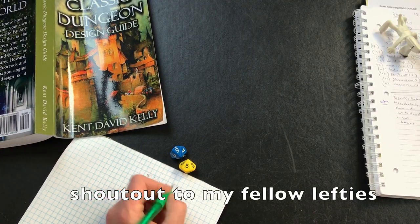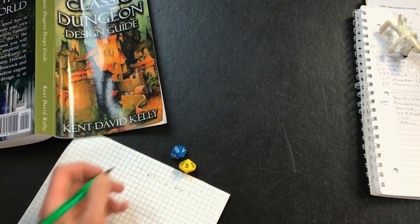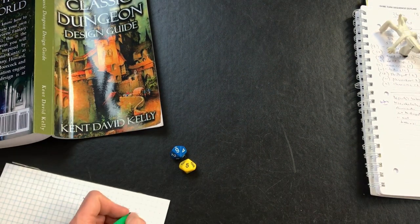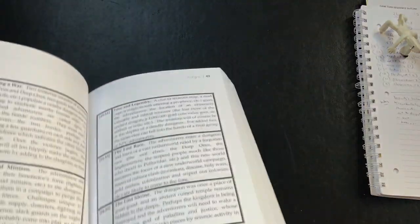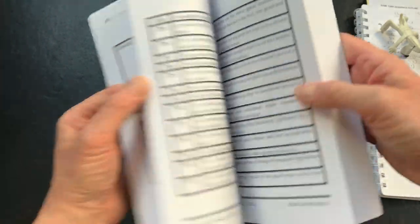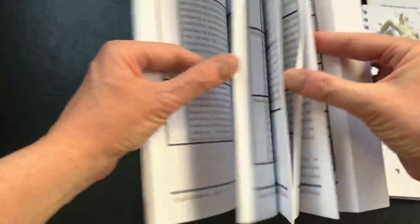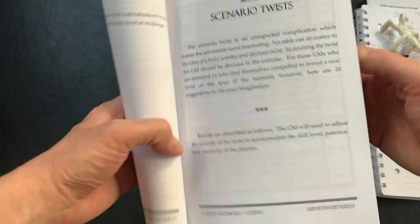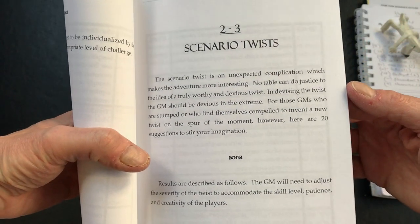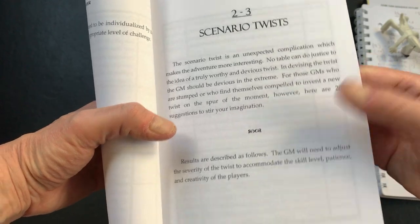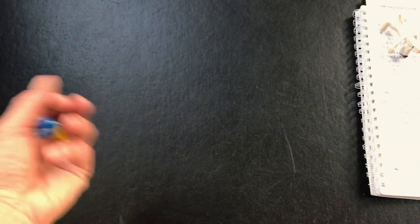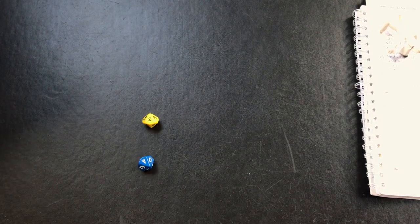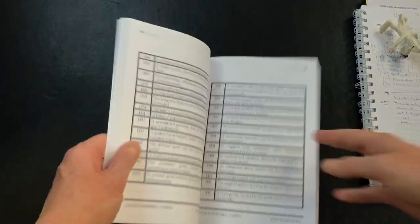Then the next section I'm going to turn to is what is called a scenario twist. This is an unexpected complication which makes the adventure more interesting. Let's see what we roll for that - 42.